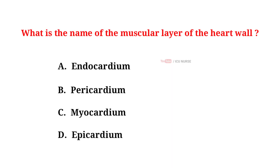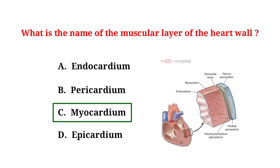What is the name of the muscular layer of the heart? A. Endocardium. B. Pericardium. C. Myocardium. D. Epicardium. And the correct answer is C. Myocardium. The muscular layer of the heart wall is called the myocardium. It is responsible for contracting and pumping blood out of the heart to the rest of the body.